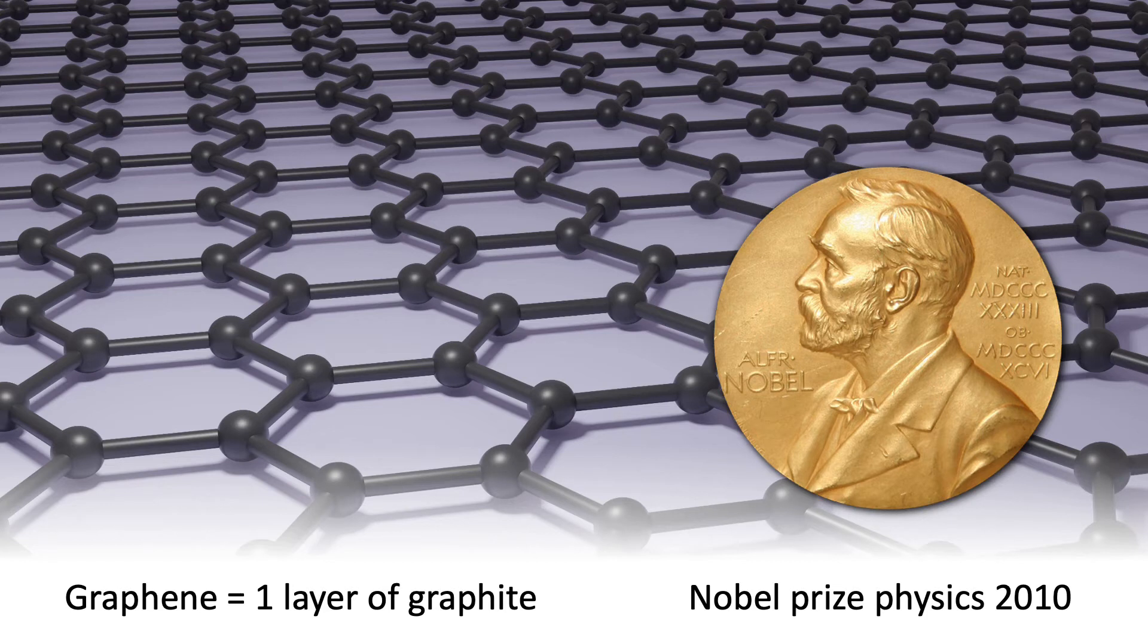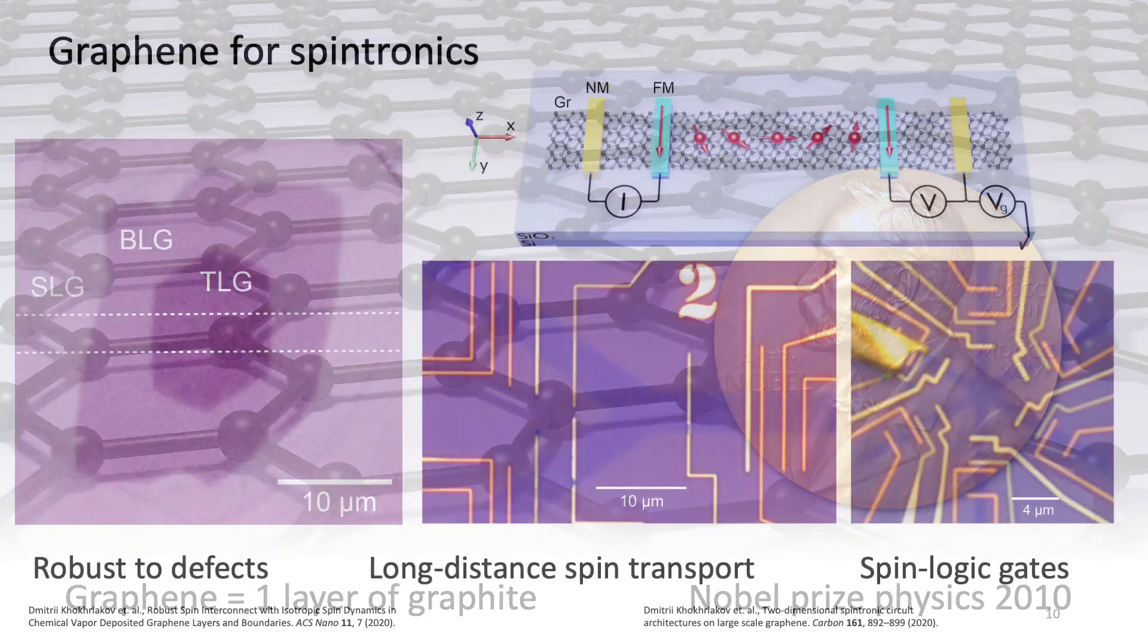Graphene was also found to be very promising for spintronics, because one of the most important material properties for spintronics is called spin lifetime, which basically tells you once you set the spins along a certain direction, how much time it takes for those spins to go back to the random state. It was found that in graphene that spin lifetime is larger than in previously studied materials.